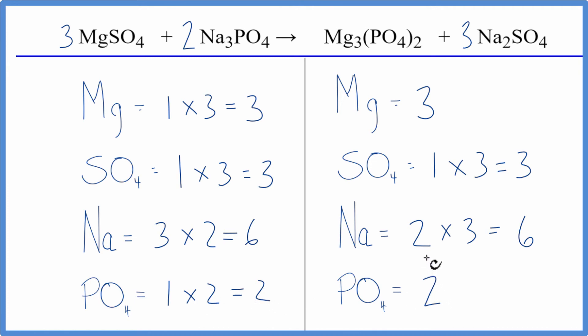This equation is balanced. You can see that by counting these polyatomic ions as one thing, if they appear on both sides, it makes it a lot easier. This is Dr. B with the balanced equation for MgSO4 plus Na3PO4. Thanks for watching.